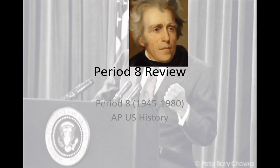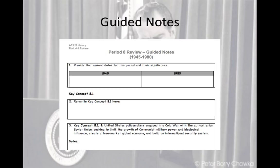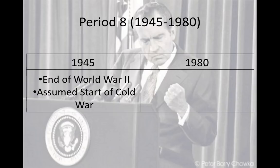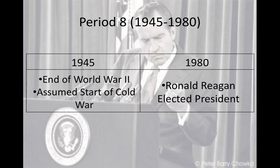Let's go ahead and remind you that Period 8 has a guided note to go along with it for you to take notes while listening to this video. Period 8 can be periodized — it starts with the end of World War II and the beginning of the Cold War, and it ends with the election of Ronald Reagan and the conservative tide in American politics that is full-fledged by 1980.